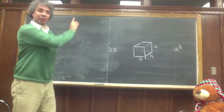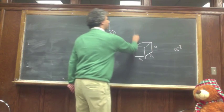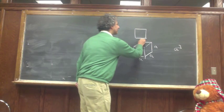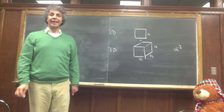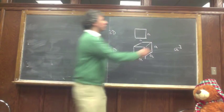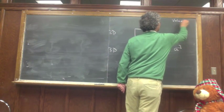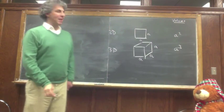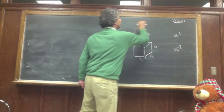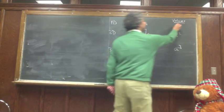In two dimensions, the equivalent object would be a square with sides a and a. The volume, called an area, would be a squared. In one dimension, it's just the length a, so the volume is a.